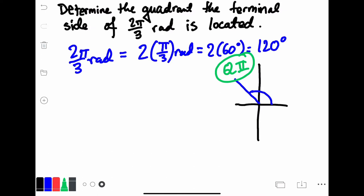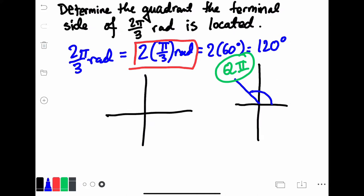The alternative method is to skip converting to degrees and just recognize that 2 pi over 3 radians is pi over 3 radians twice, meaning you are moving 60 degrees twice. You can visualize this by graphing it and saying you're going to move 60 degrees twice — 1, 2 — and notice that places you right there in quadrant number 2. It's the same exact angle, but you didn't have to convert it to degrees; you can still visualize exactly where that angle is located.